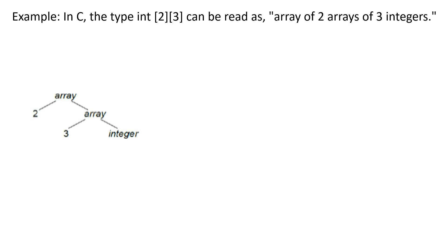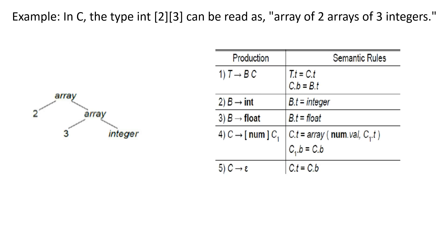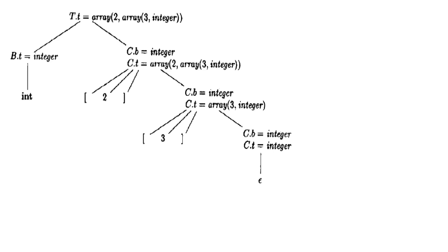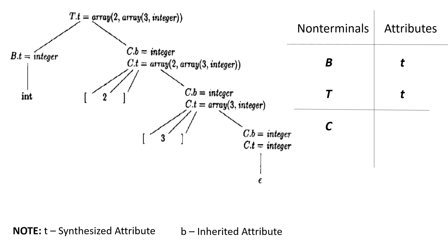Given this set of productions and semantic rules, we now get this tree. The non-terminals b and t have a synthesized attribute, which is the letter t, while the non-terminal c has two attributes, an inherited attribute b and the synthesized attribute t.